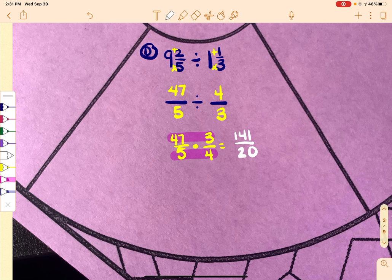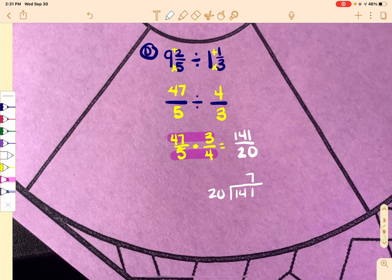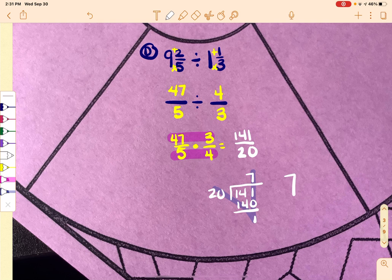Now I know that if I were to put this into Desmos, it's not going to reduce, but the top is larger than the bottom. So that means I'm going to have to go through and divide it. So the most times it can go in there is 7, which is 140, and I have 1 left over. So it's going to be 7 and 1 over 20.